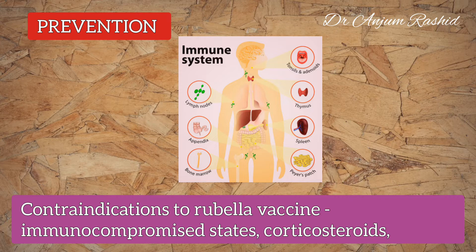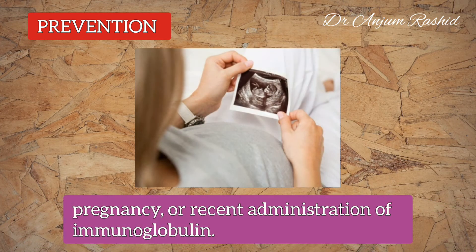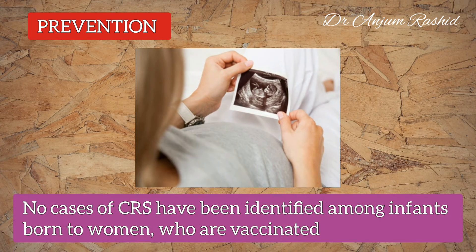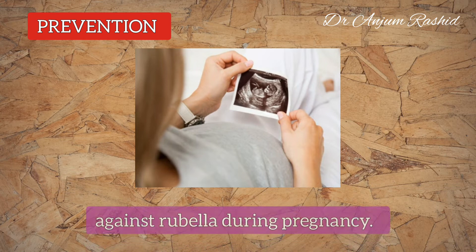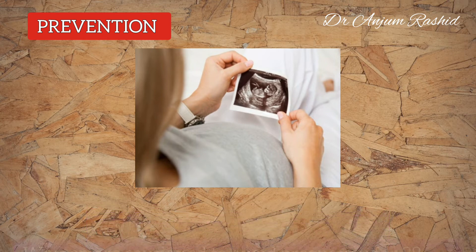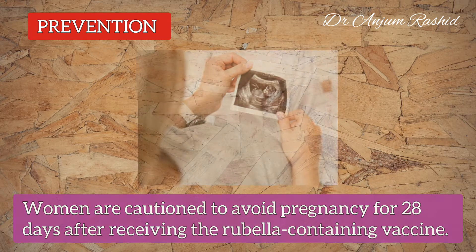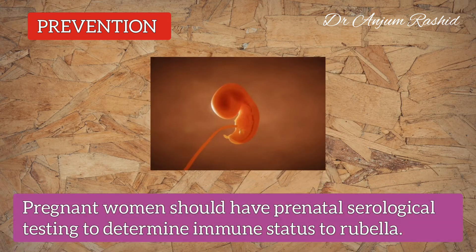Contraindications to the rubella vaccine include immunocompromised states, immunosuppressive courses of corticosteroids, pregnancy, or recent administration of immunoglobulin. No cases of congenital rubella syndrome have been identified among infants born to mothers who were vaccinated against rubella during pregnancy.